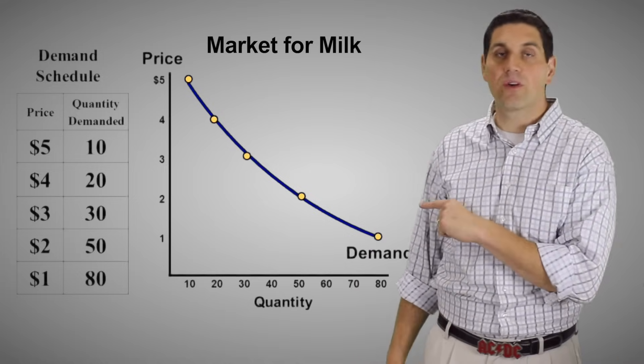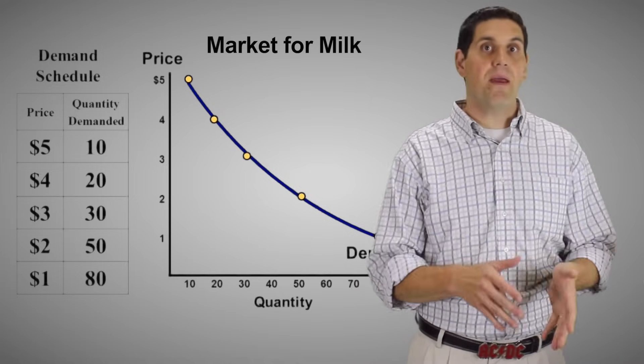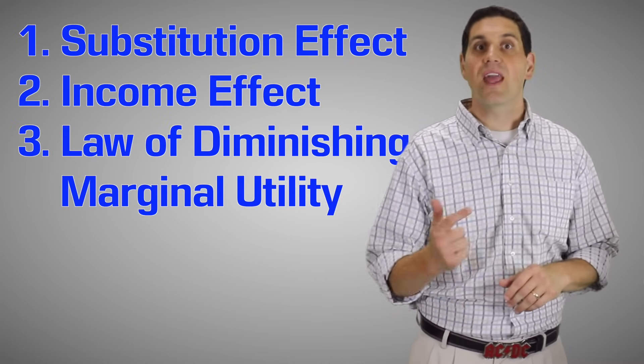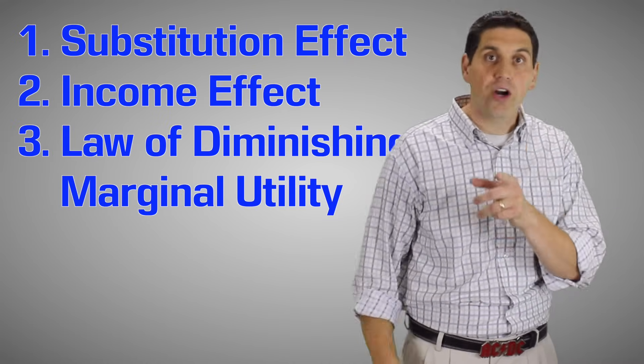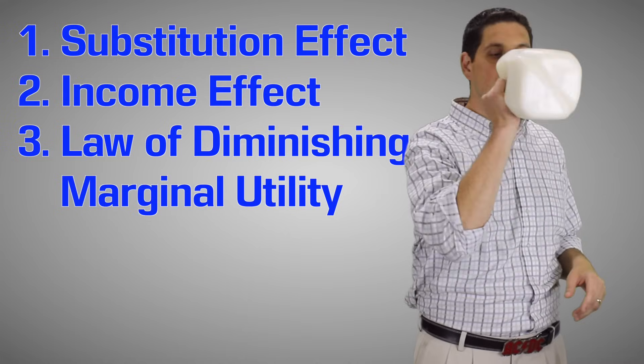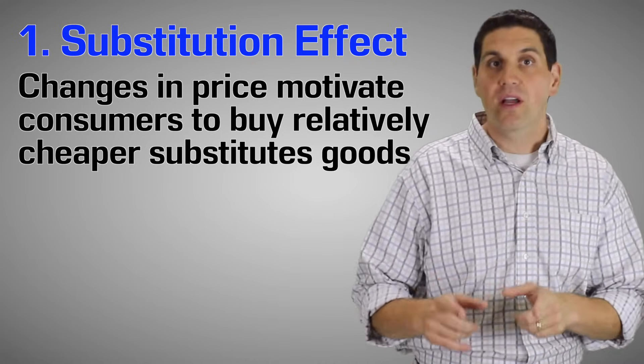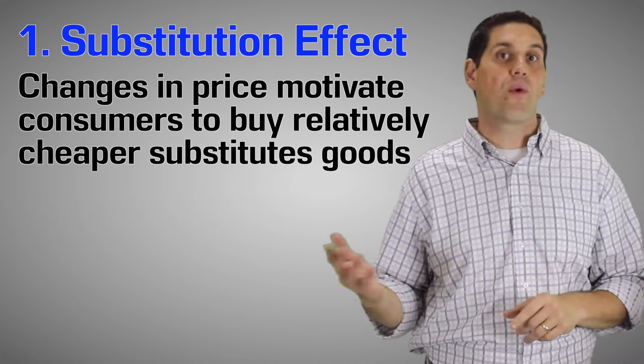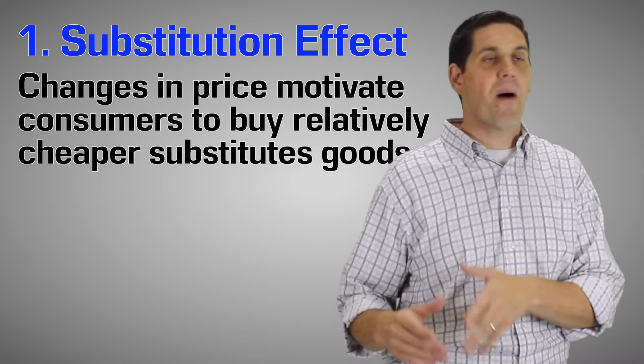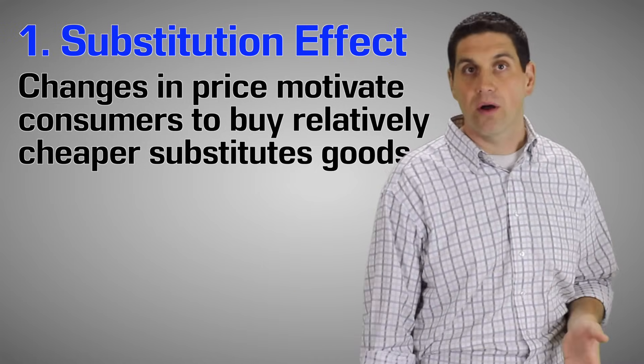Now there are three reasons why the demand curve is downward sloping. It's the reason for the law of demand. It's the substitution effect, the income effect, and the law of diminishing marginal utility. Substitution effect says, price goes down for milk, people are going to buy more milk because they're going to move away from other products that are now relatively more expensive. So instead of buying juice, people will turn around and go buy more milk.